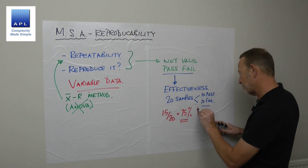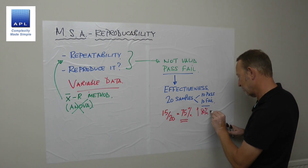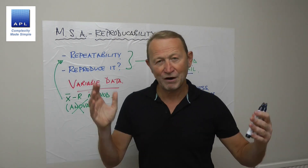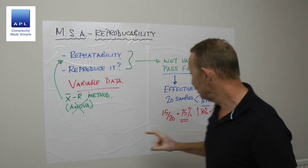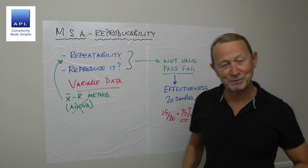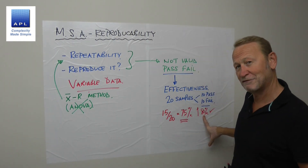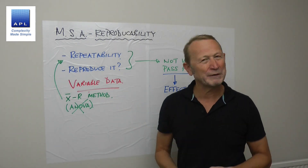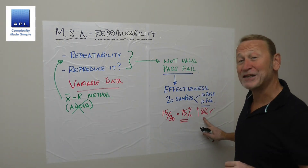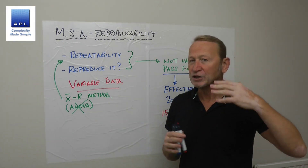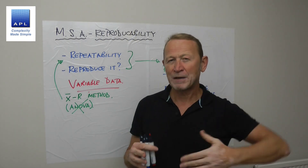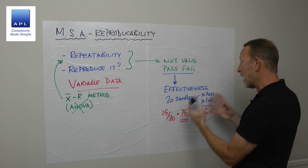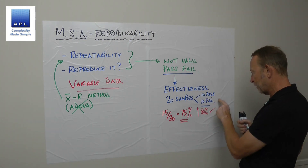If you give 20 samples to your measurement system and it gets 15 correct, its effectiveness is 75%. We would like effectiveness to go above 80% for an acceptable measurement system. Of course, if you've paid half a million pounds for a super high-end piece of kit, you'd probably want it to do better than the human benchmark of around 80%.